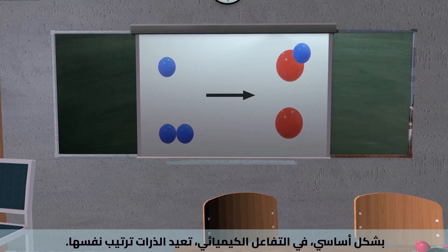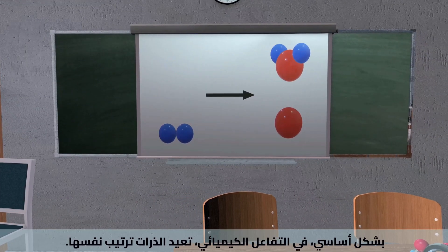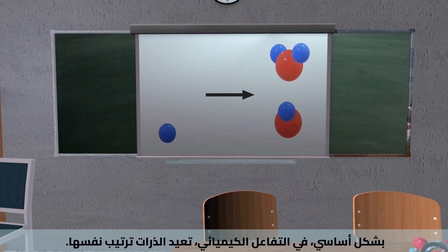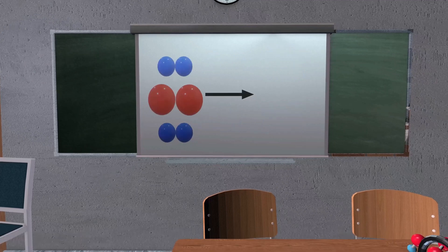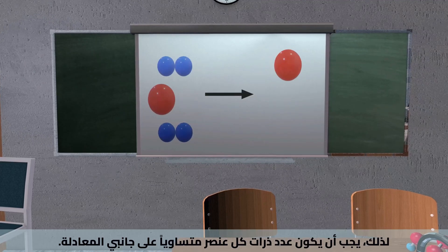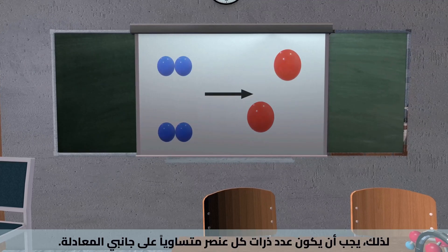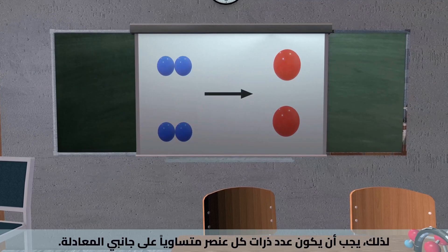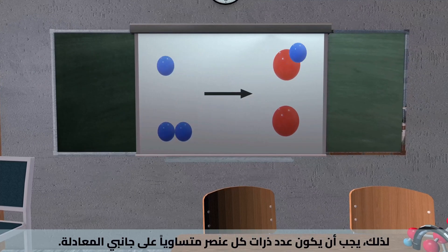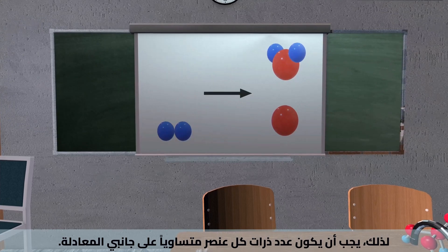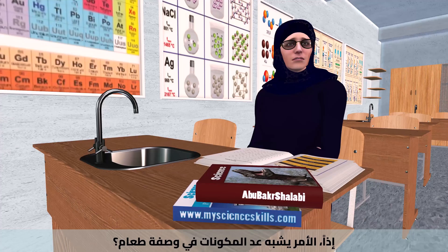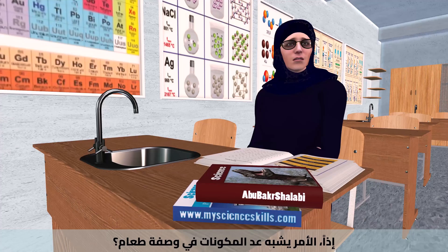Basically, in a chemical reaction, atoms just rearrange themselves. So the number of atoms of each element needs to be the same on both sides of the equation — it's like counting ingredients in a recipe.